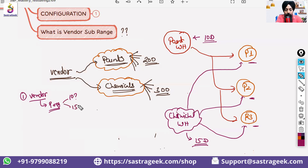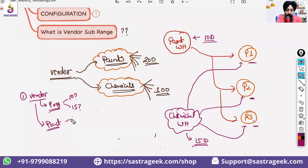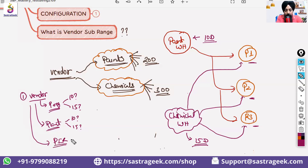You can try to define it at the plant level, but there you also face the same question — some materials come in 10 days, some in 15 days. Alternatively, you can define it at the Purchase Info Record level, where for a particular material from a particular vendor you can define 10 days or 15 days individually.